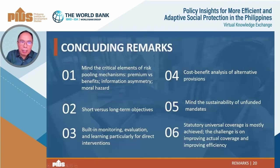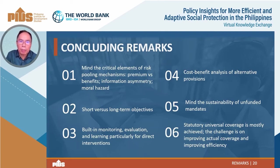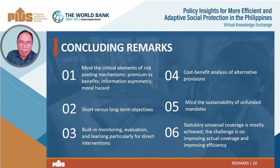Let me conclude with six statements. First, we should mind the critical elements of risk pooling mechanisms. Risk pooling mechanisms such as insurance or contributory pension systems should never forget the critical elements that make the system work: benefits should always be in sync with premiums, and one cannot expand benefits without a commensurate increase in premiums. We should also remember asymmetric information between buyers and sellers, as well as strategic behavior such as moral hazard.